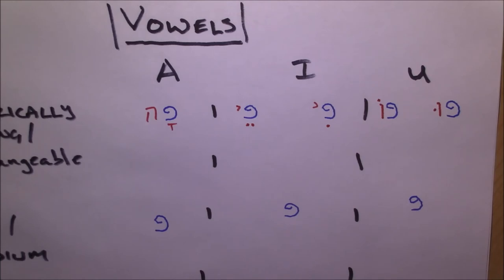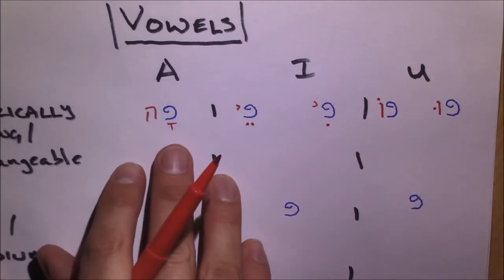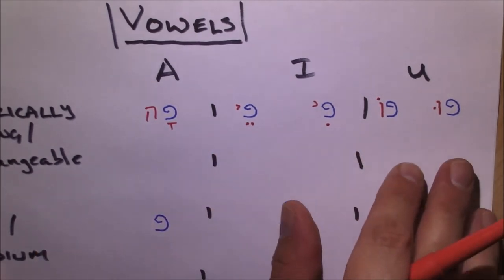Now the shurek is an interesting one because every once in a while it will appear at the beginning of a word. We'll talk about why that is a little bit later on in the course, but it's good to sort of introduce that now. So when vowels are reduced or lengthened, they will not change. They will always stay like this.